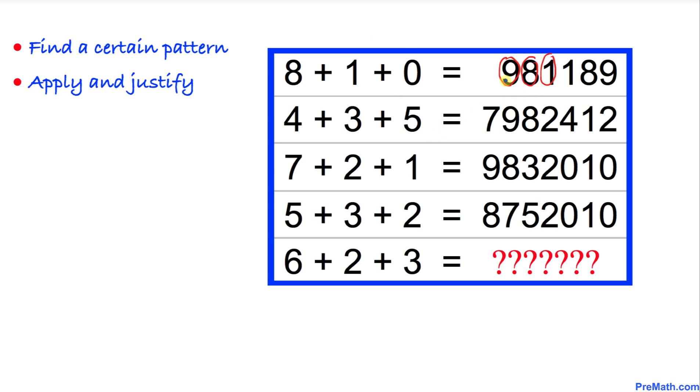Now the next step is we are going to add these first three numbers: nine plus eight plus one. If we add them up, we are going to get 18 as you can see over here.